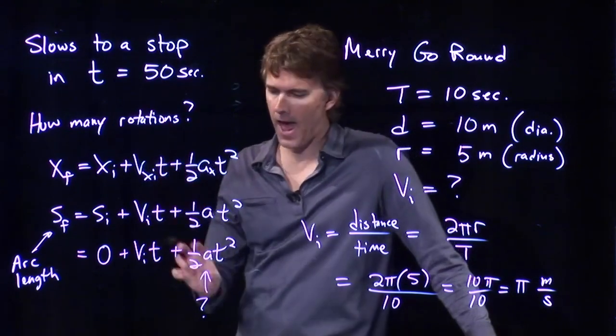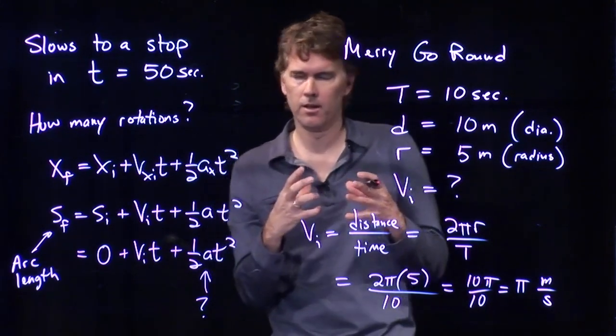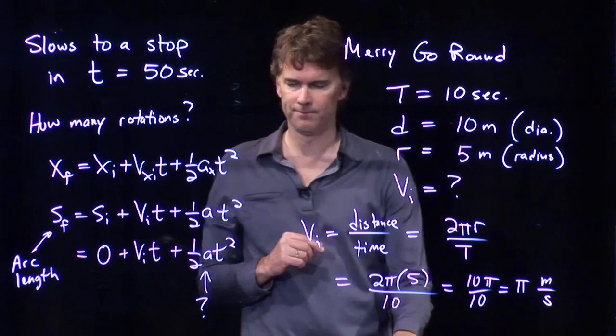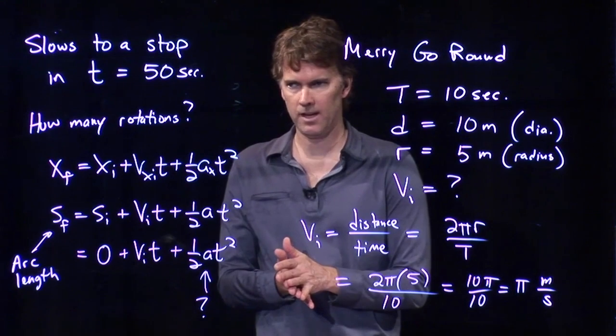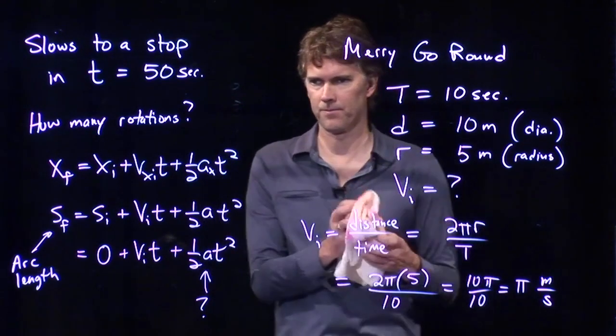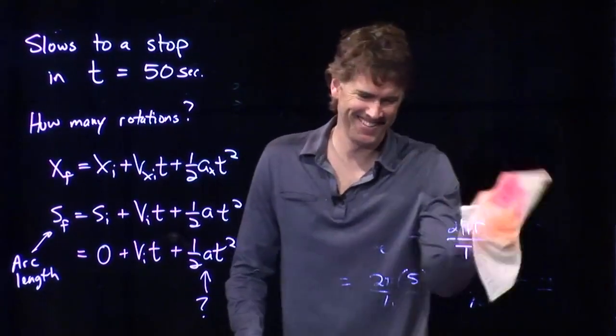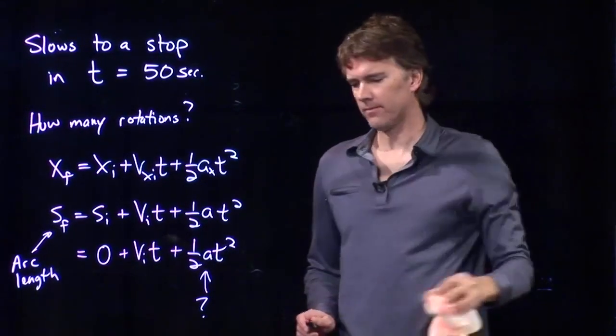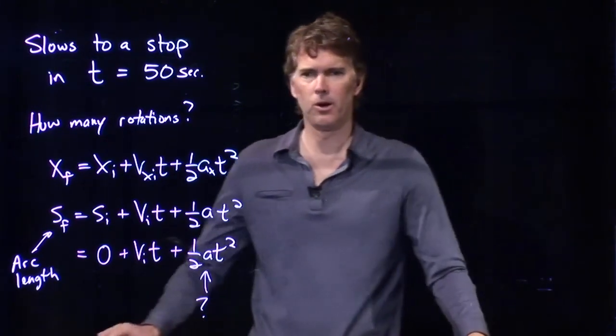All we know is that this thing is slowing to a stop, which means it does have some acceleration, right? That's something that's slowing down this merry-go-round. But we don't know exactly what that acceleration is. So, this equation looks like it's not going to do it for us. Is there another kinematic equation that we can use? Can we raise your hand? If you came to lecture, you know the answer. Yes, Laura.